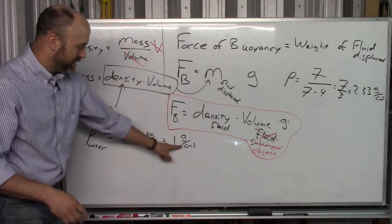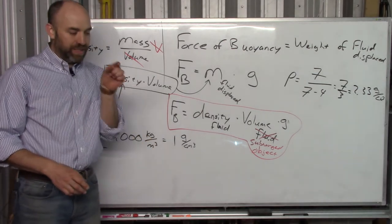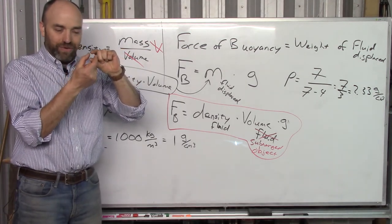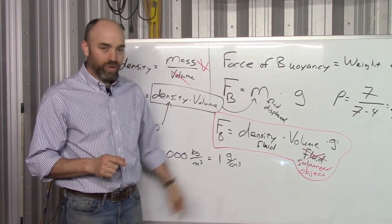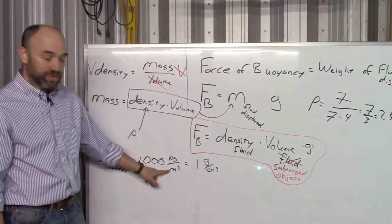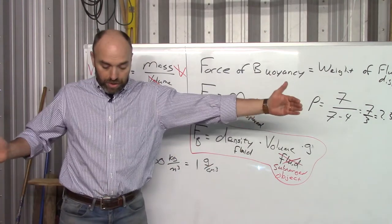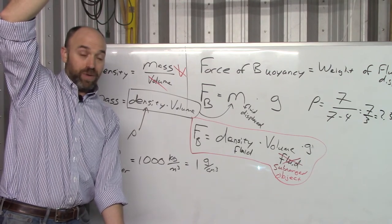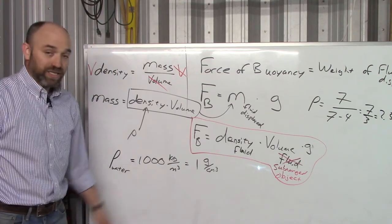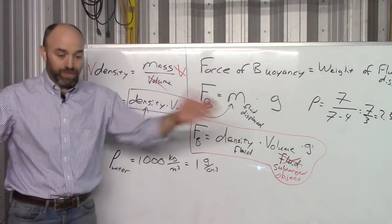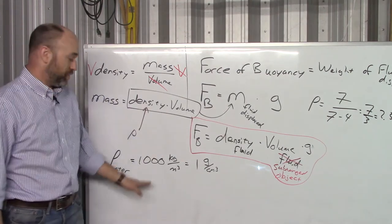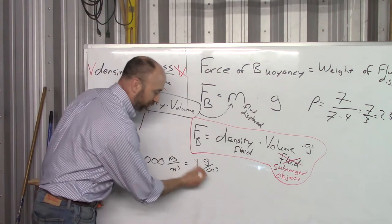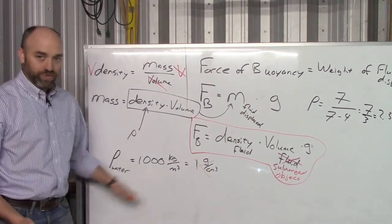Think about it: a centimeter-by-centimeter-by-centimeter box filled with water weighs 1 gram. A cubic meter — 1 meter by 1 meter by 1 meter — filled with water weighs 1,000 kilograms. That's a big box. Same statements, both describing the density of water. The chemistry unit is 1 gram per centimeter cubed; the physics unit is 1,000 kilograms per meter cubed. So with that in mind, let's try our first example. Let's go back to Archimedes for a minute.